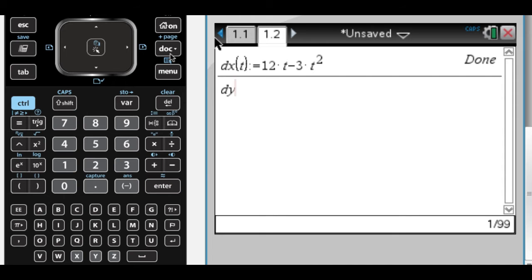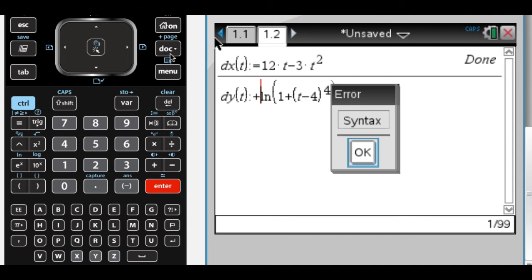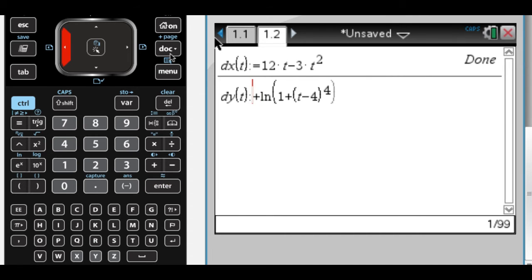And they give us dy of t, which is the natural log of 1 plus the quantity t minus 4 to the 4th. And it's a good idea to look at that one and make sure you got it right. There you go, I definitely don't. Is it equal to? All right, there we go. So natural log of 1 plus the quantity t minus 4 to the 4th. That's a weird derivative.